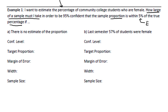For Part A, we'll assume there's no estimate of the proportion. The confidence level is 0.95. The target proportion, since there is no estimate, tells us to use 0.5. The margin of error is 5%, which as a decimal is 0.05. The width is 2 times that: 2 times 0.05 is 0.1. Let's go to StatCrunch and compute the sample size.